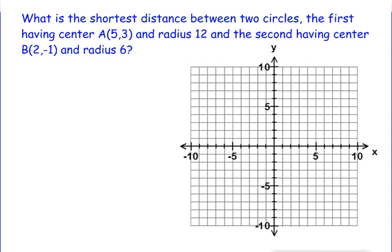So a good starting point would be to graph both of these centers. We're going to graph A at (5,3) and then we're going to graph B at (2,-1). Now we have this line that connects these circles, so we're going to go ahead and draw that line in.